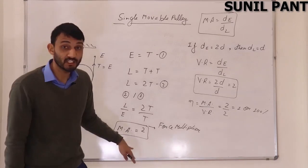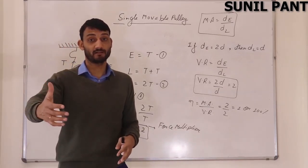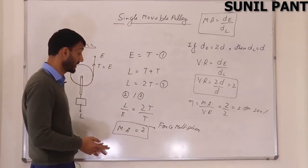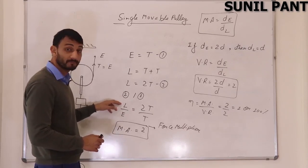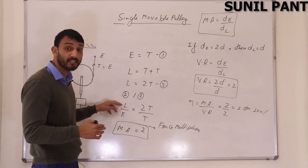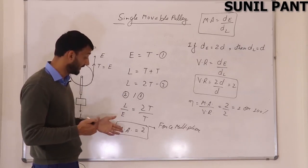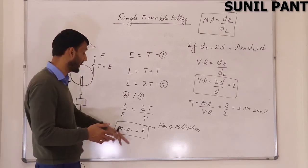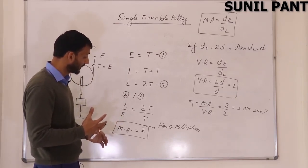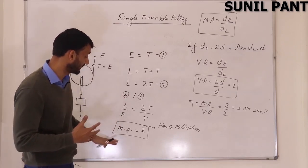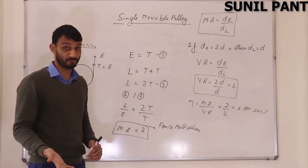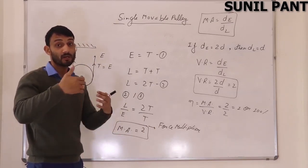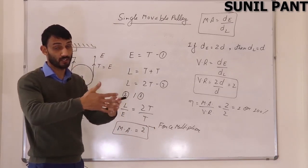Whenever for a machine mechanical advantage is greater than one, the machine acts like a force multiplier. In this case it is a force multiplier because the load is more as compared to the effort. By applying a lesser amount of force, you are lifting up a load which is more than the effort. So this is a force multiplier — it is multiplying your force.